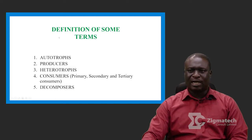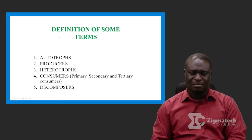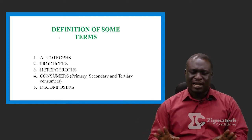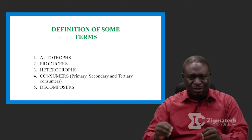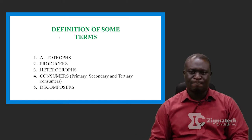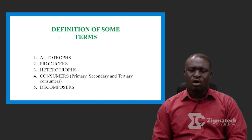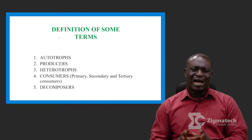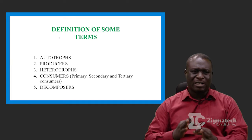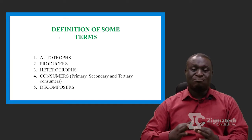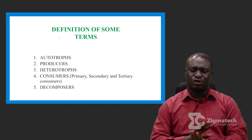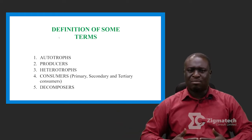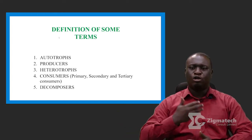Now let's look at the definition of some terms. There are some terms you'll need to understand in an ecosystem. The first one is what we call autotrophs. Autotrophs are actually living organisms that can manufacture their own food. They don't depend on any other organism for their food — they can manufacture their own food or nutrients.